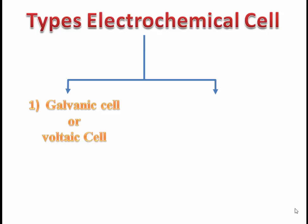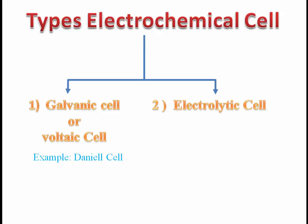Galvanic cell is a cell in which chemical energy is converted into electrical energy. An example of galvanic cell is Daniel's cell. The second type is electrolytic cell, in which electrical energy is converted into chemical energy.